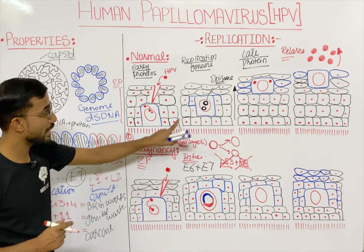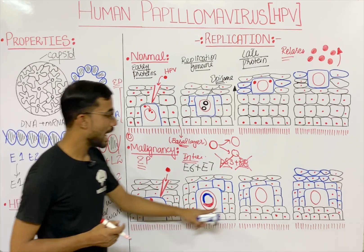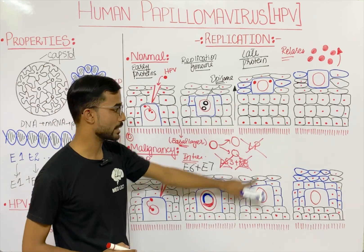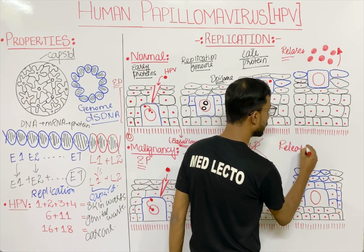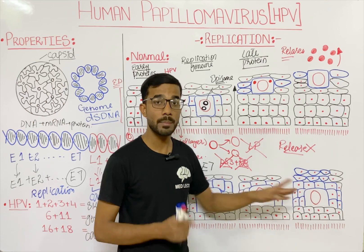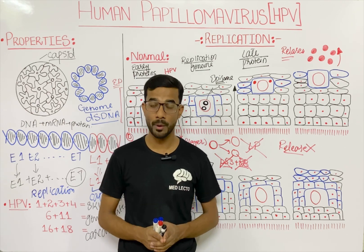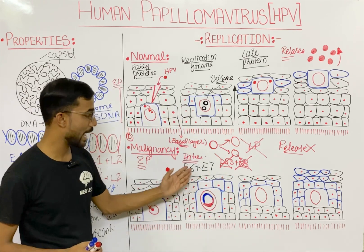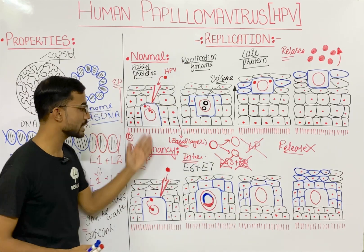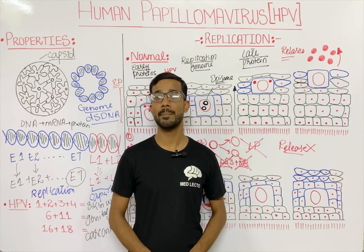In this malignant case, there is no expression of the late genes, no formation of late proteins, and no release of the virus. Instead, you see just the conversion of squamous cells into malignant cells, because the viral proteins E6 and E7 destroy the tumor suppressor genes p53 and retinoblastoma of the squamous cell. This is how HPV converts normal cells into malignant cells - the normal replication process versus the malignant transformation process.